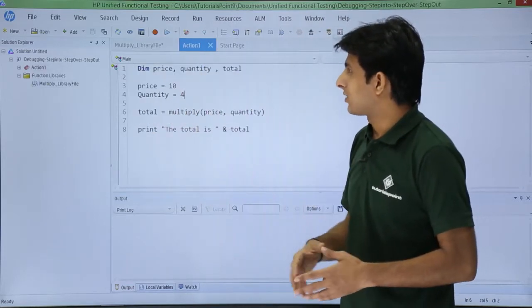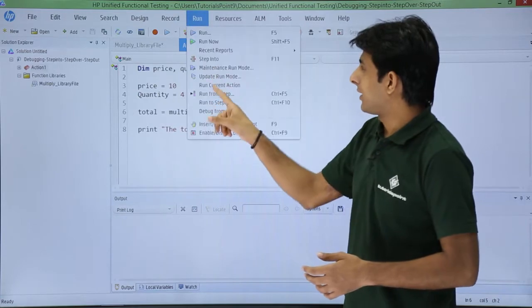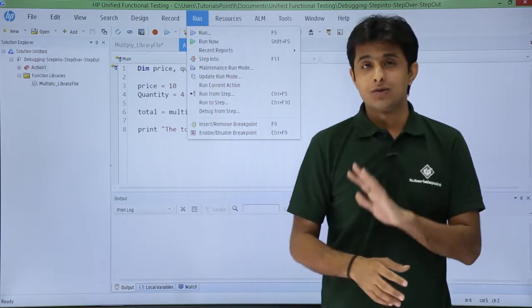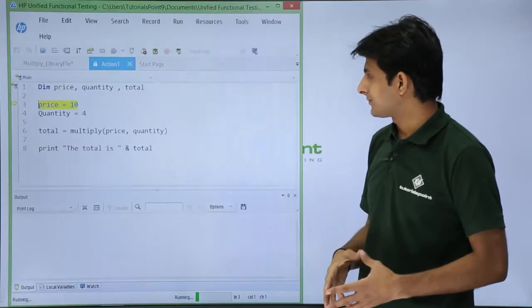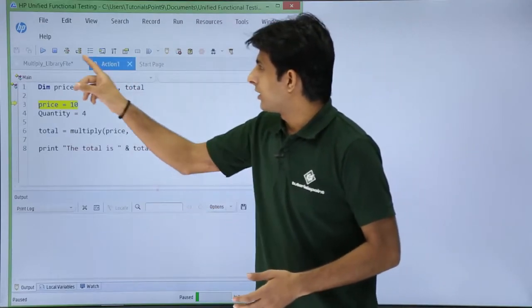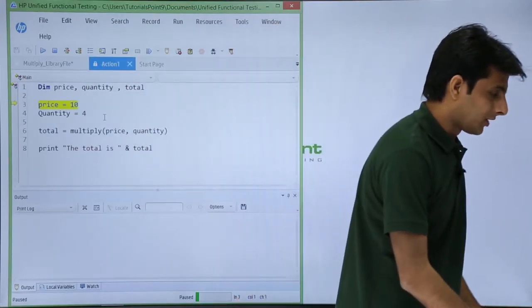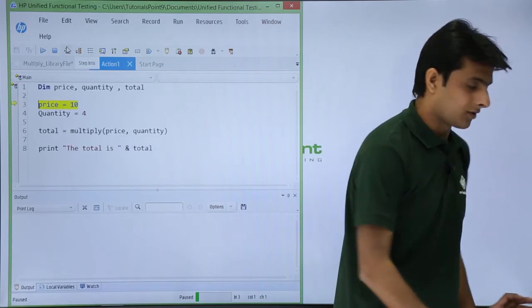I'll just go to this action and go to the run menu bar. You see there's a step into but there is no step out. I'll click on run, and now if you see there's an option here that is step into.